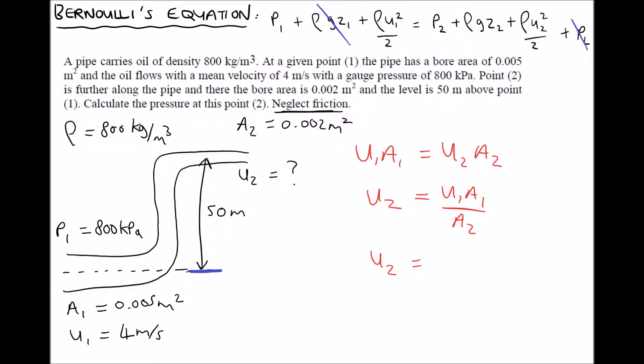So U2 is U1 A1 divided by A2. And plugging in values, we get U2 equals 4 for U1, 0.005 for A1, and 0.002 for A2. Giving us a value of U2 equal to 10 meters per second. So let's add that value to our diagram, and then we can calculate the pressure at position 2.